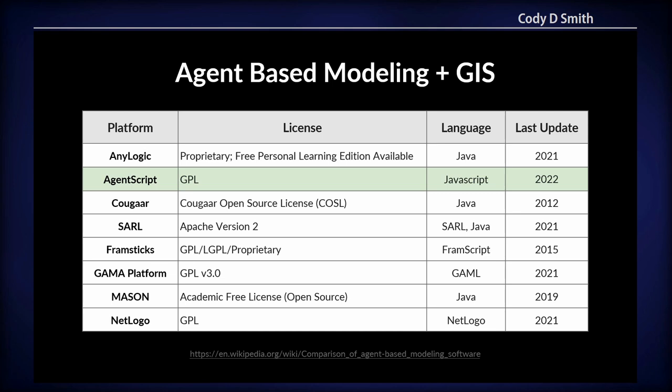Now I'm going to talk about the different software available for agent-based modeling with GIS. There's quite a bit — this isn't a complete list, but these are the ones that support GIS natively. Most of them are in Java, and some are proprietary. NetLogo is definitely the most popular. It has a web-based version and a Java version; the Java version supports GIS but the web version doesn't. I'm going to be talking about AgentScript, which is our own product. It's JavaScript, it's open source, and you can get to it at agentscript.org.